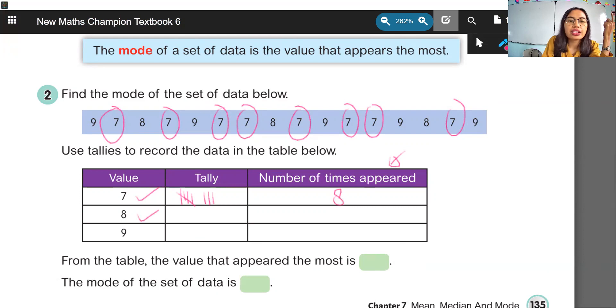Number 8. 1, 2, 3. Ada lagi nomor 8? No. Oh, just 3 times. Okay, number 9. 1, 2, 3, 4. Okay, so we have 4 times.